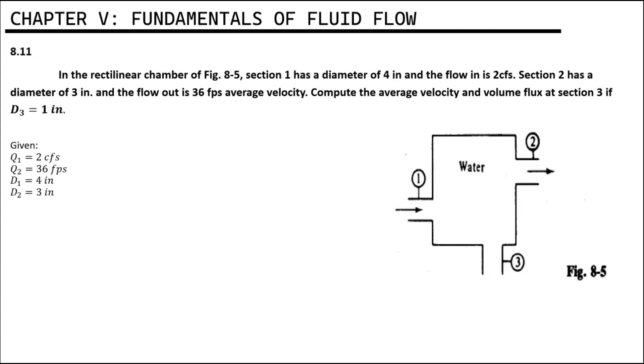We have identified all the given values. We can now solve for the average velocity and the volume flux at Section 3. Our formula here is Q1 equals Q2 plus Q3. Let's assume that Q3 is flow out.